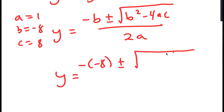For each of these values of y, I need to find the corresponding value of x, because for the system of equations solution I need both x and y. Going back, we have x equals 8 minus y.